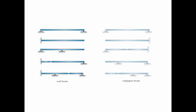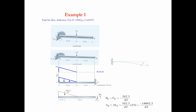We can find an example to understand this. Example 1: find the maximum deflection. Take E equal to 200 GPa and I equal to 60 × 10⁶. A load of 5 kN is applied. The length of the beam is 50 feet to 15 feet, with a 5 kN load in the upward direction and a moment of 15 kN·ft.